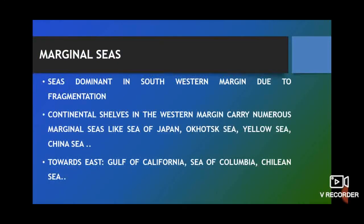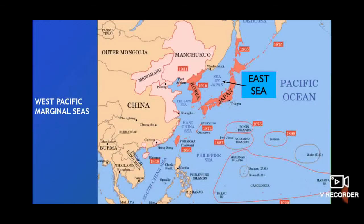Let's look into the marginal seas of the Pacific Ocean. The western margin of the Pacific Ocean is a fragmented area, and as a result, there are a number of marginal seas on the western margin, including the Bering Sea, Sea of Japan, Yellow Sea, East China Sea, South China Sea, and many others. There are only a few important marginal seas on the eastern part, such as the Gulf of California, the Sea of Colombia, and the Chilean Sea.